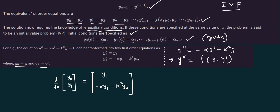We set y1 equals to y prime. Then y0 prime equals to y1 is the first equation. For the second equation, y double prime equals to alpha y prime minus k squared y, which means y1 prime equals to alpha times y1 minus k squared times y0.